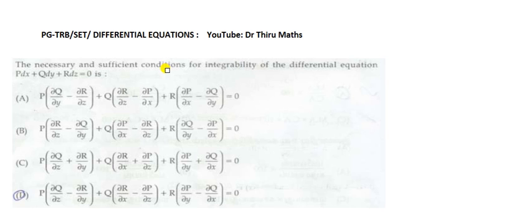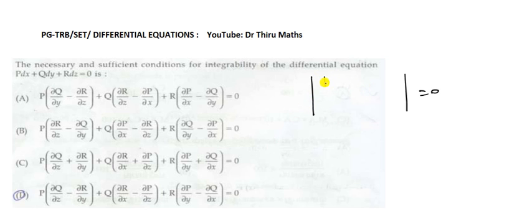The necessary and sufficient conditions for integrability of the differential equation Pdx plus Qdy plus Rdz equal to 0. This necessary and sufficient condition can be easily remembered by using a determinant. Students familiar with determinants will see that the condition can be obtained by expanding the determinant with P, Q, R.